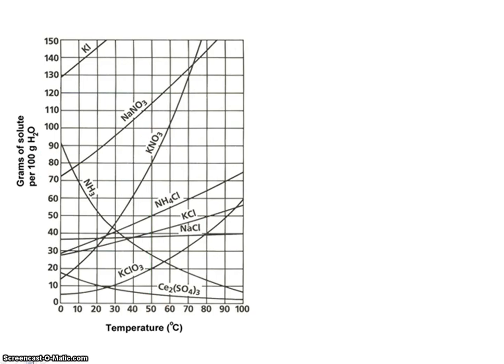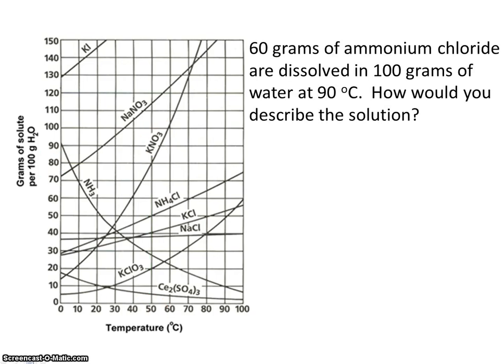Let's take a look at another problem. 60 grams of ammonium chloride are dissolved in 100 grams of water at 90 degrees C. How would you describe the solution? So we have 60 grams of ammonium chloride. Here's the saturation amount for ammonium chloride.